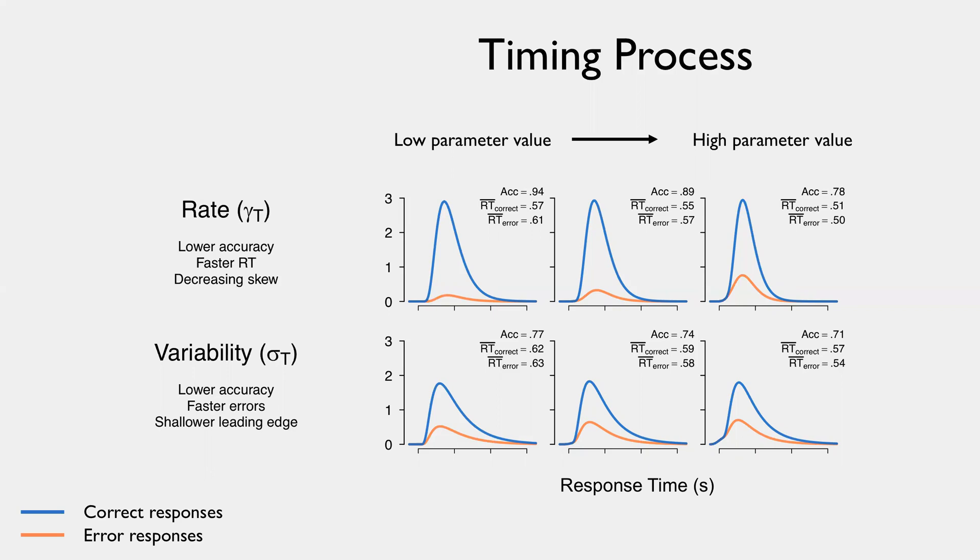we have accuracy decrease, and the mean RT also goes down, where errors gradually become faster, and we see a shallower leading edge to the distribution.